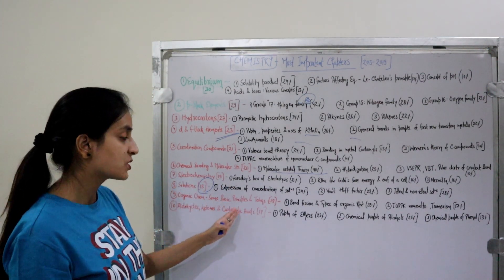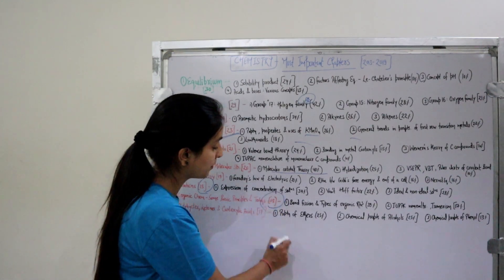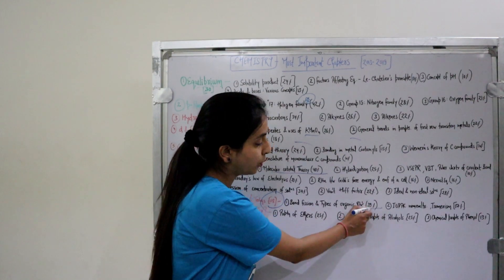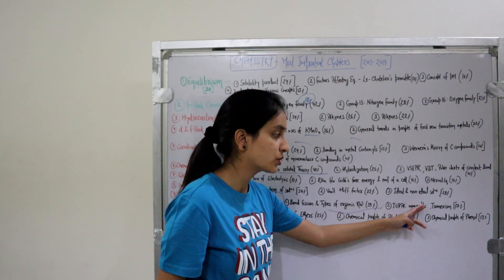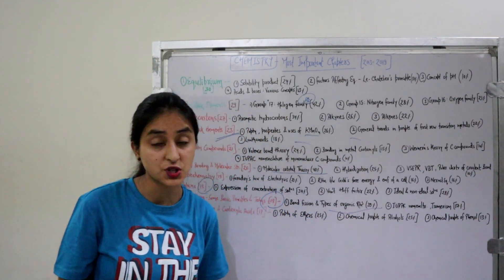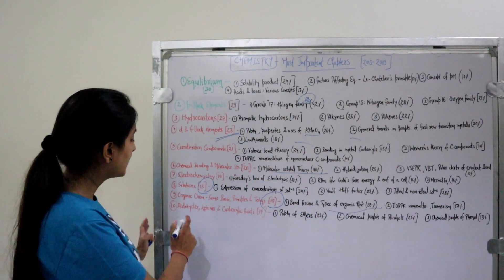Ninth important chapter: Organic Chemistry - Some Basic Principles and Techniques—18 questions from past 7 years. Most important topics: Bond Fission and Types of Organic Reactions, IUPAC Nomenclature, and Isomerism. In both nomenclature and isomerism topics, 17% questions each in the past 7 years.